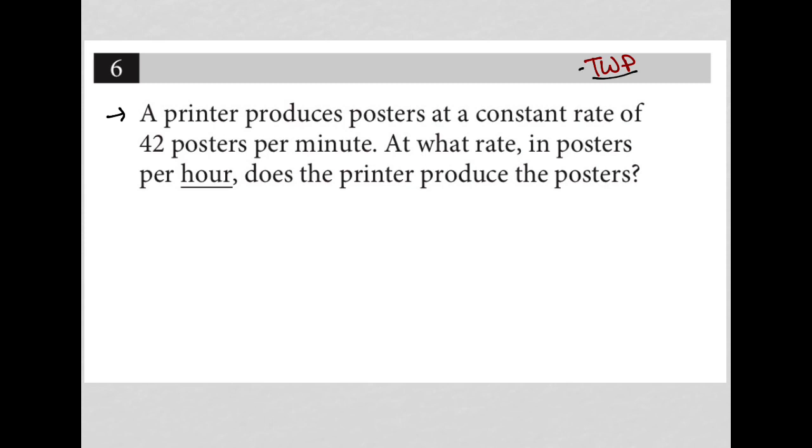The question says a printer produces posters at a constant rate of 42 posters per minute. The general rule for translate word problems is anytime you see quantitative information, you want to write that down. So here are my 42P per M, and I know that P stands for posters and M stands for minutes.